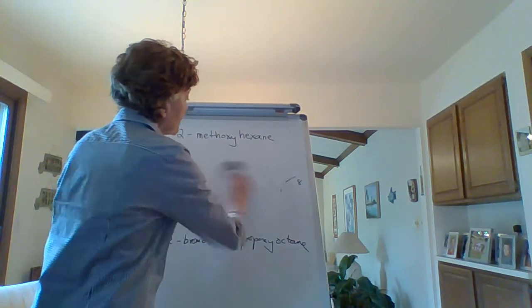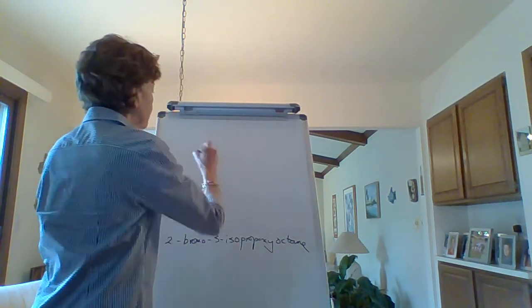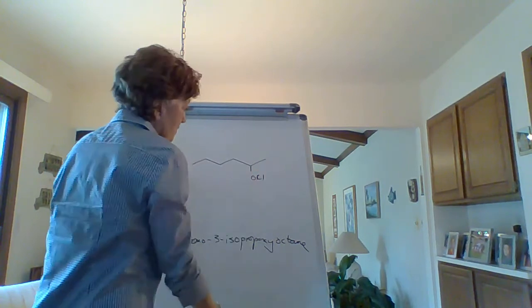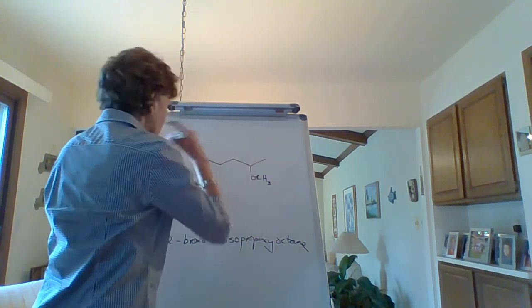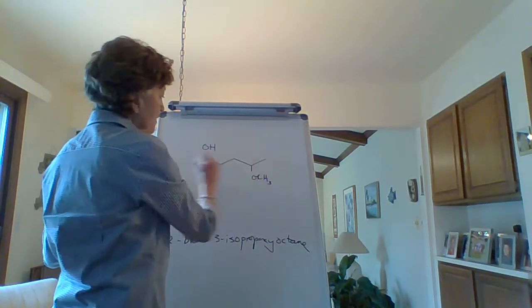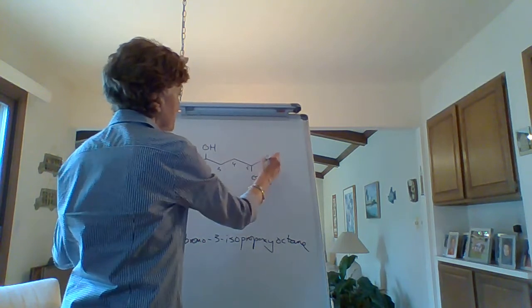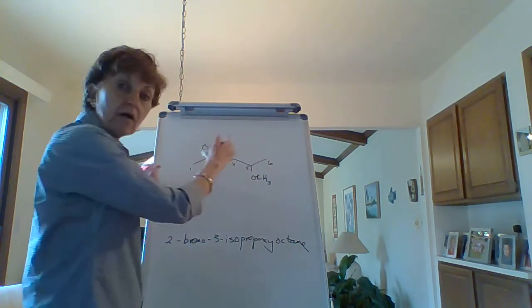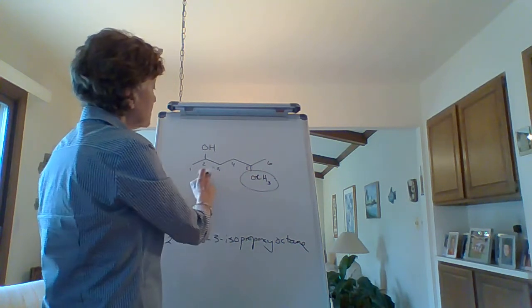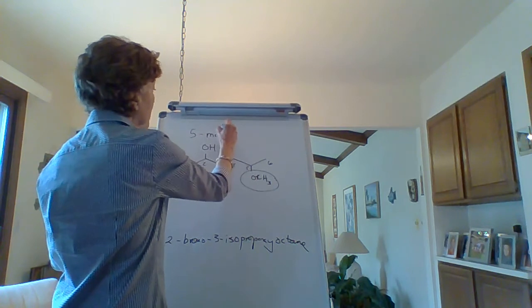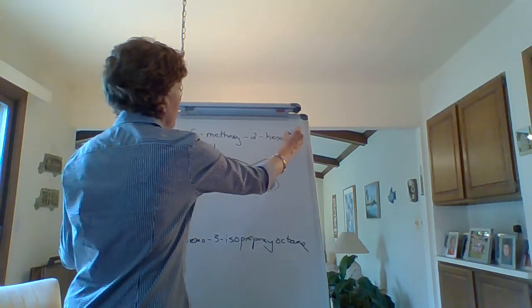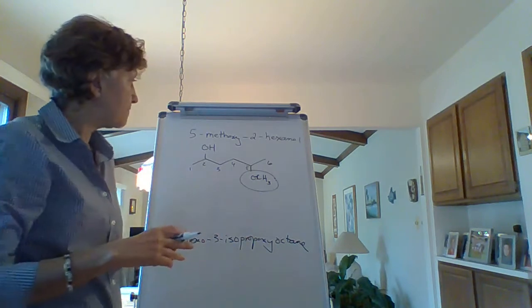If you have an ether and an alcohol in the same molecule, you have to name it as an alcohol, and this is a substituent. We'll number it left to right 1, 2, 3, 4, 5, 6. Why left to right? Because the alcohol has priority, so you give it a lower number. This is just a methoxy substituent. You write 5-methoxy-2-hexanol. The two tells everybody where the hydroxyl group is.